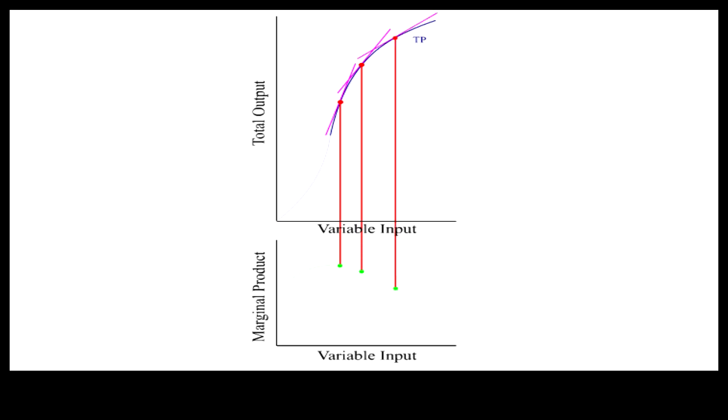Falling marginal product means that each additional worker adds less to the total output than the one before. This decreasing returns results from congestion, as the stapler cannot catch up with the folded documents.